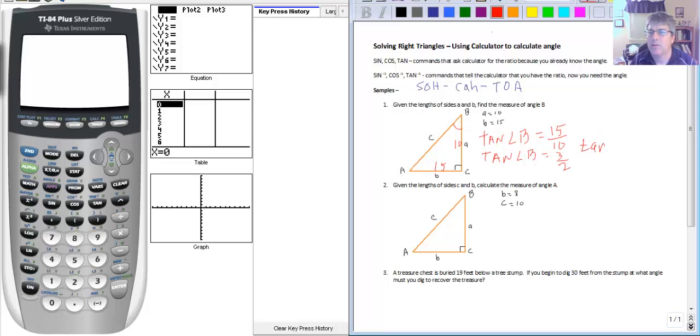So I would input tangent to the negative 1, parentheses 3 over 2. This I would say is calculator ready form. Make a note of that. And let's go to our calculator.